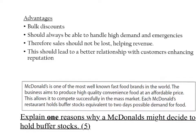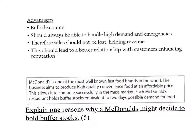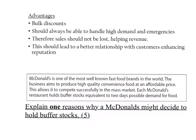Now I've just found this question. McDonald's is one of the most well-known fast food brands in the world. The business aims to produce high-quality, convenient food at an affordable price. This allows it to compete successfully in the mass market. Each McDonald's restaurant holds buffer stock equivalent to two days' possible demand for food. Explain one reason why a McDonald's might decide to hold buffer stock. So you may think, well, why would they hold buffer stock if it could expire? Well again, they've got sophisticated stock control and they know two days is enough.